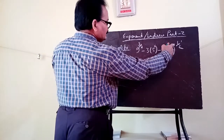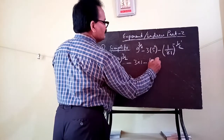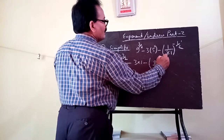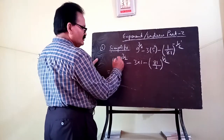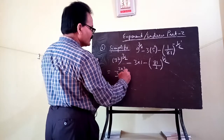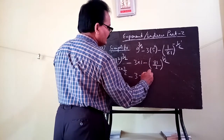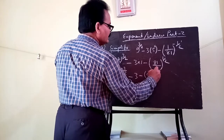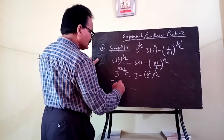Since the power on 1 by 81 is negative, to convert to positive power you simply invert it by finding the reciprocal — that is 81 to the power 1 by 2. Now the power becomes positive. You multiply the powers together: 3 squared whole to the power 3 by 2 gives 3 to the power 3. Then, 81 can be written as 9 to the power 2, and outside power is 1 by 2, so the 2s cancel, giving 9.